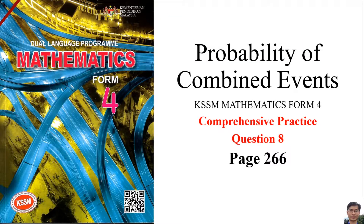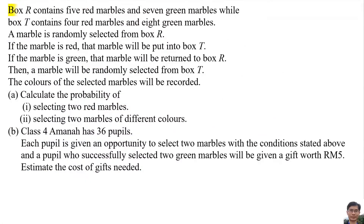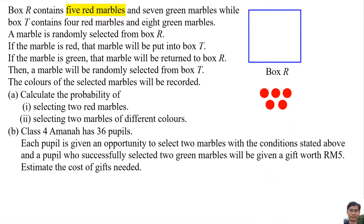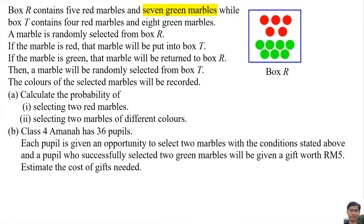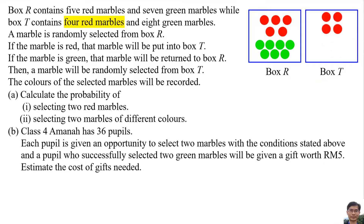Probability of Combined Events, KSSM Mathematics Form 4, Comprehensive Properties, Question 8, Page 266. Box R contains 5 red marbles and 7 green marbles, while Box T contains 4 red marbles and 8 green marbles.